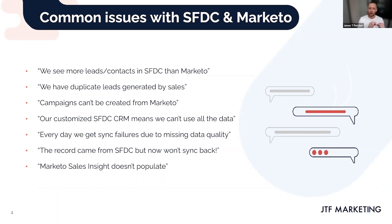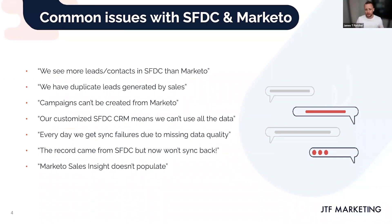We're always looking at an individual who has an opportunity, who is a member of an account, who has a custom object, who may have a sales activity against them in Salesforce. All that information is attached to that one individual person. You can of course flip that around and say 'show me any accounts with people who have these characteristics' — and that's your smart list within Marketo.